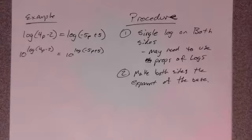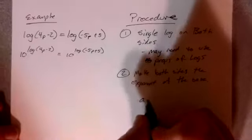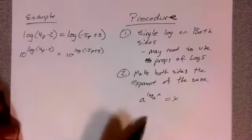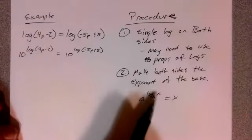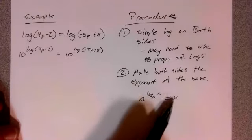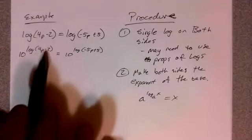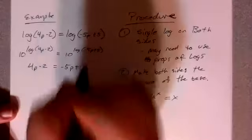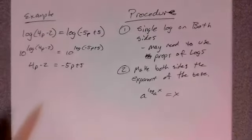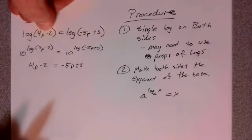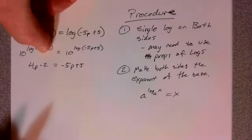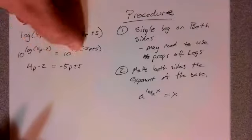And this works because of that one fun pattern that we had, where we had a raised to the log base a of x is just simply x, right? Remember that pattern? Meaning that the argument now is all I'm left with. So here I'm left with just the argument of that log. So I get 4p minus 2 equals negative 5p plus 5. Now, some of you might just look at it and go, well, if we have the same bases, can't we say that the arguments are equal? Yeah, absolutely, you sure can.